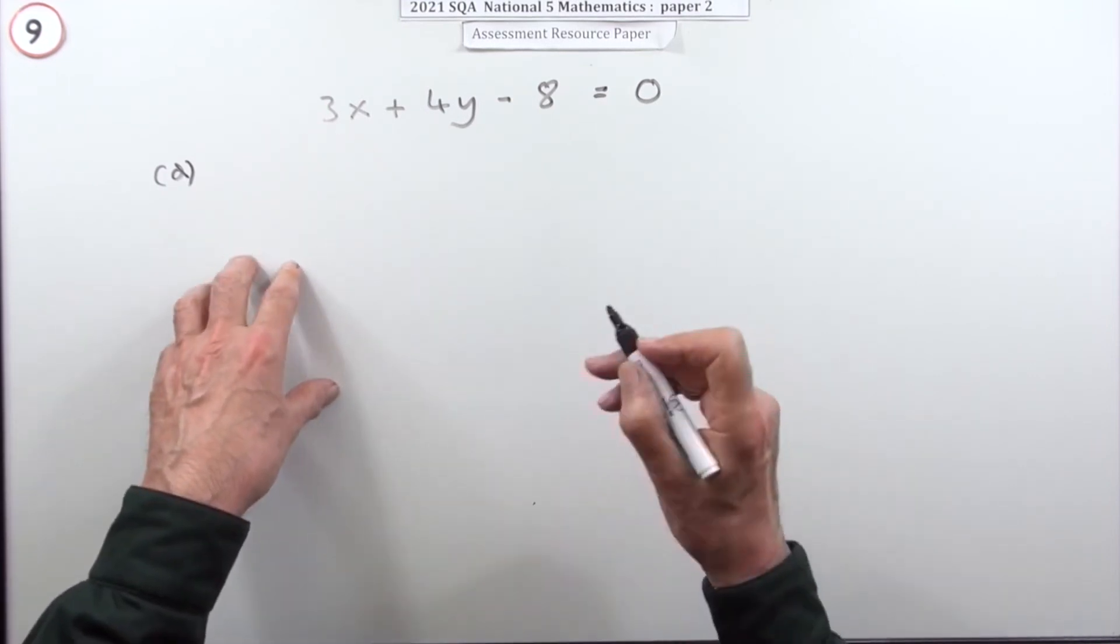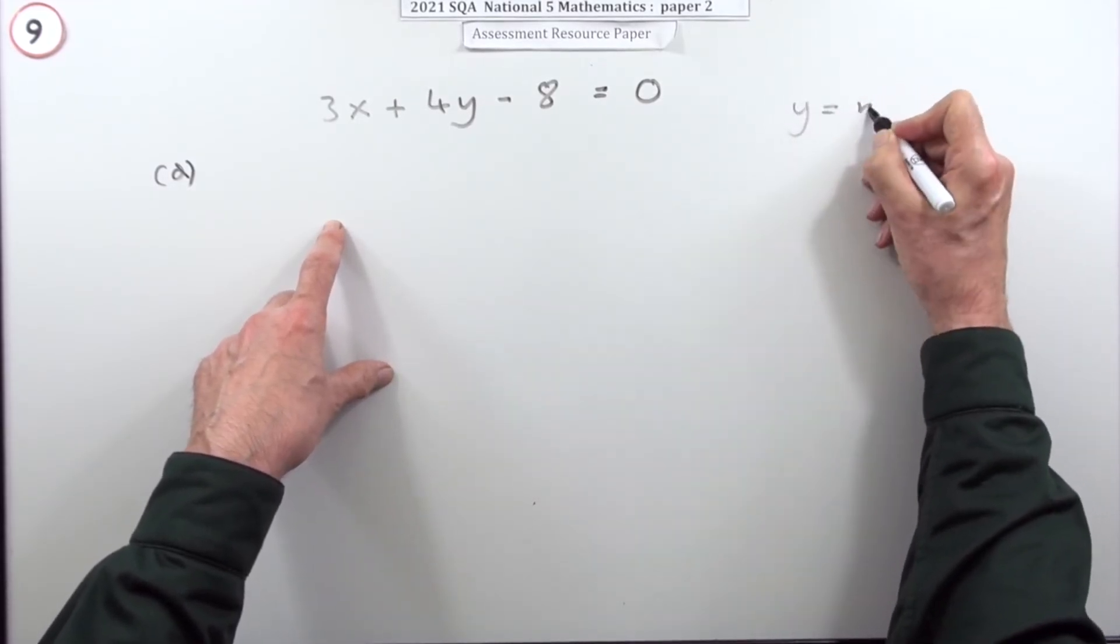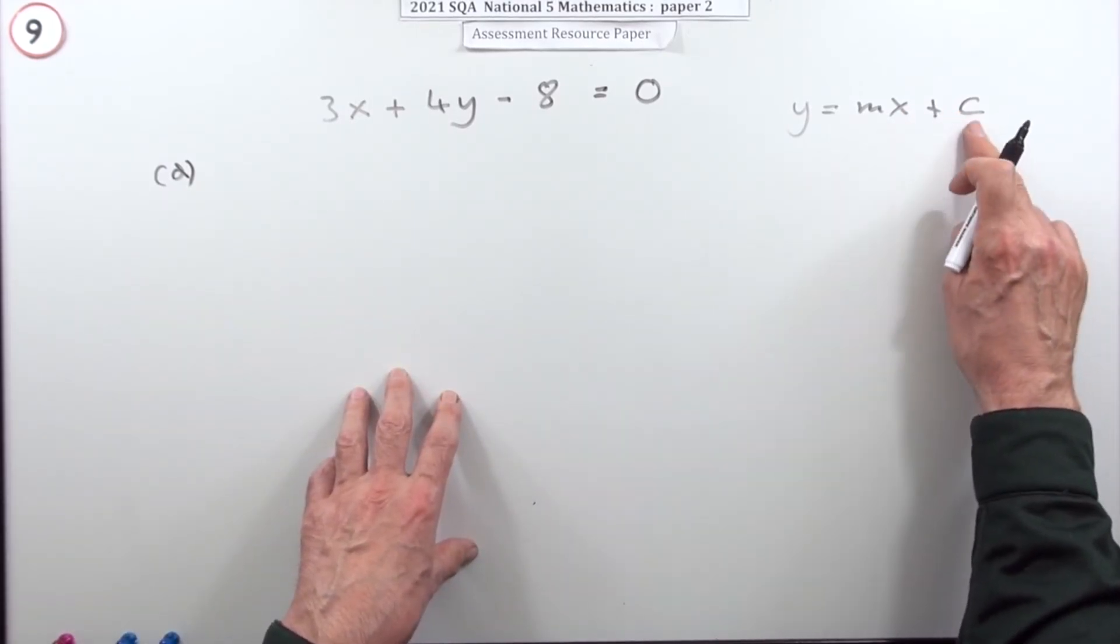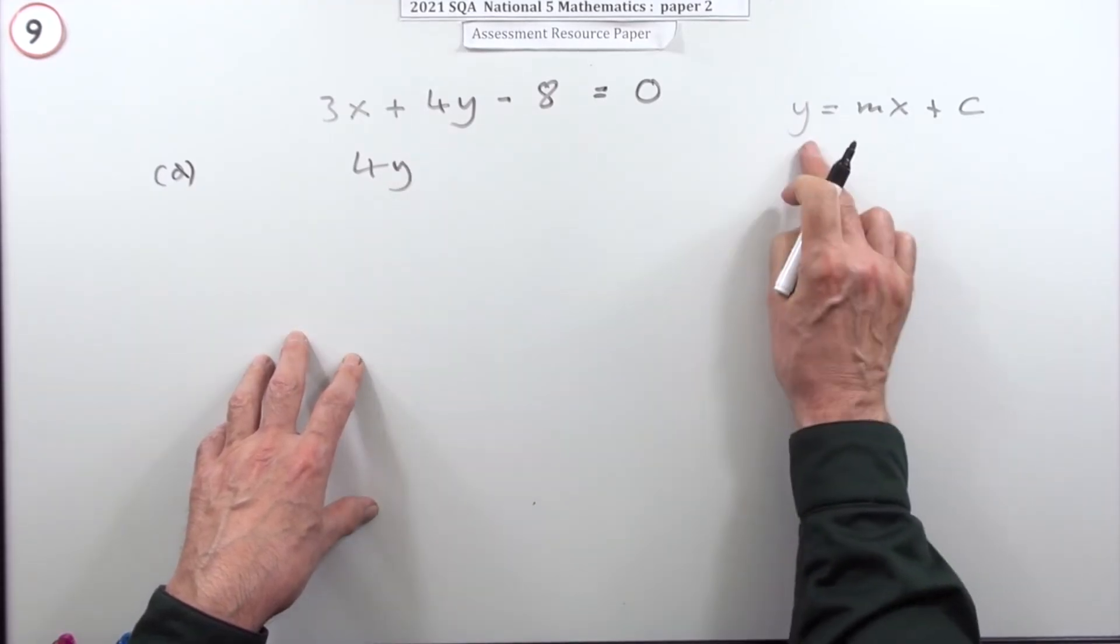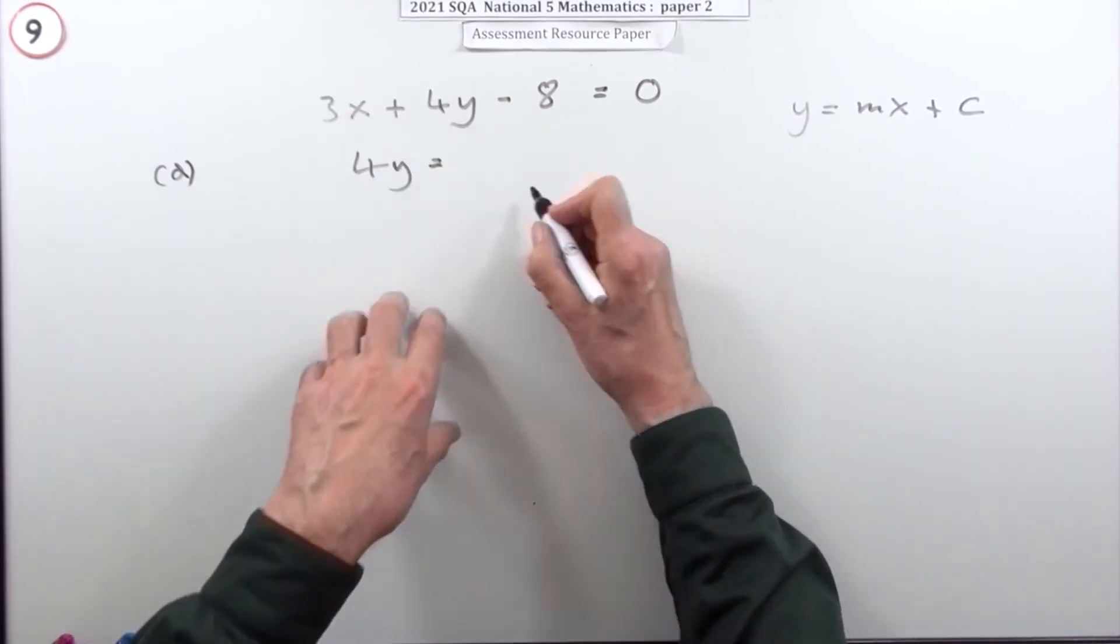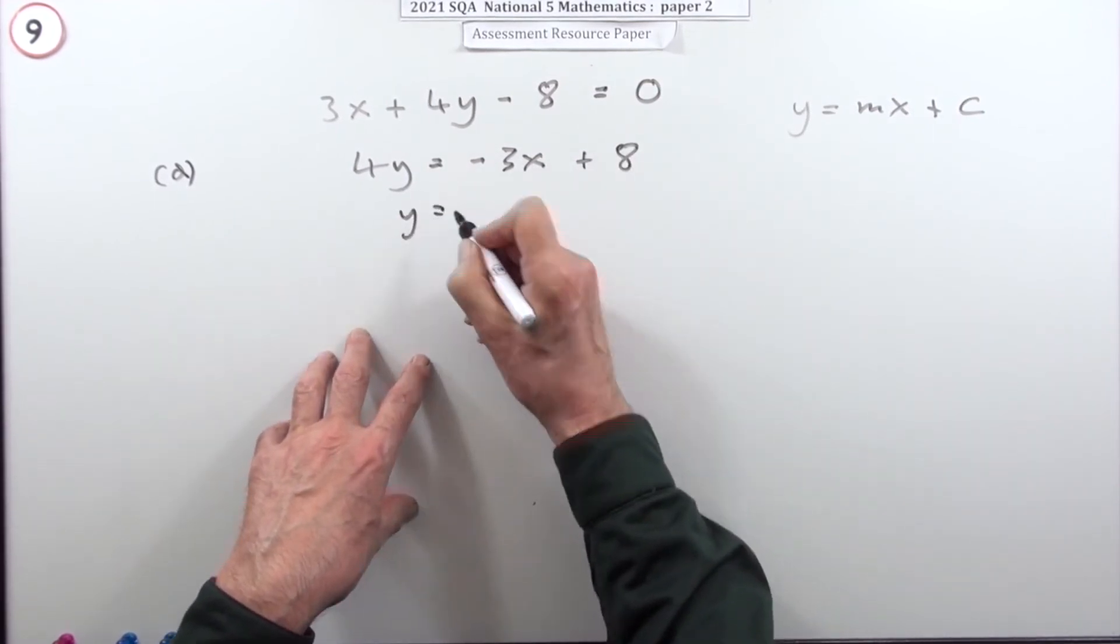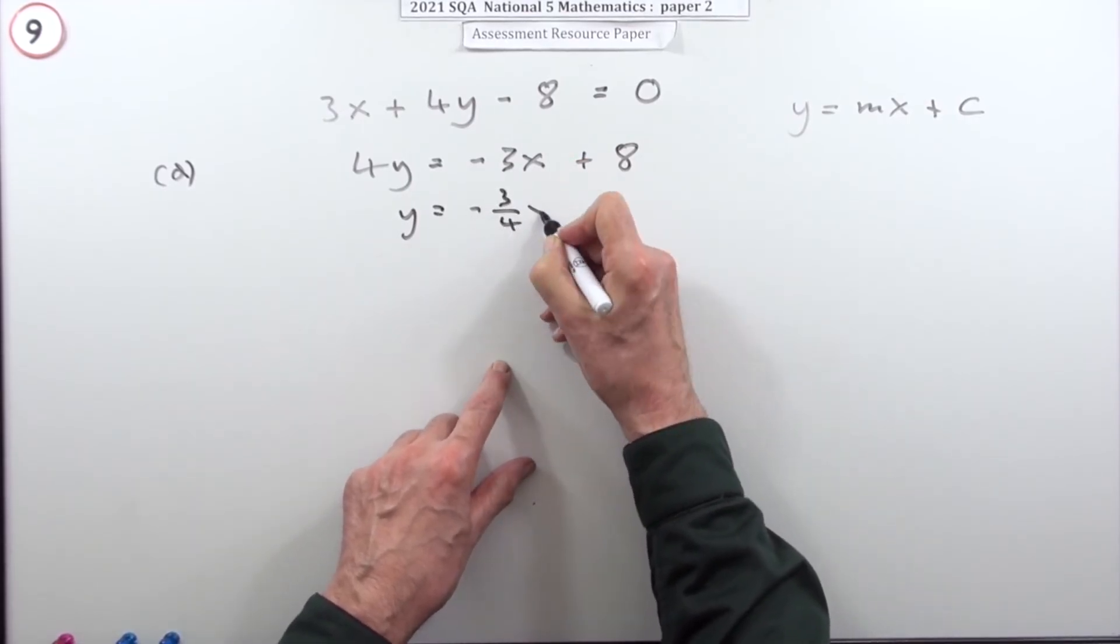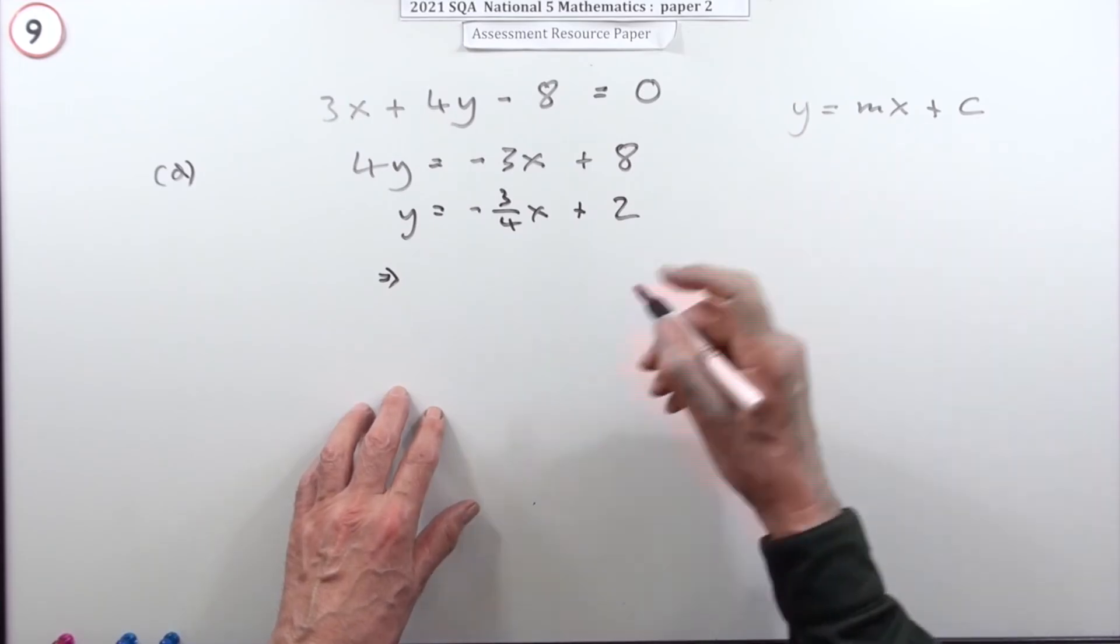That's not the gradient. You only get the gradient if it's in the form y equals mx plus c, so that's what you're going to aim for. You need it in that form because then you can see what the line looks like - that's the gradient and where it cuts the y-axis. Rearrange this then: 4y equals negative 3x plus 8. Divide by 4, remembering everything gets divided by 4. So negative 3 divided by 4, and 8 divided by 4.